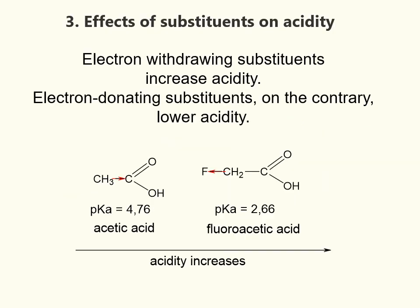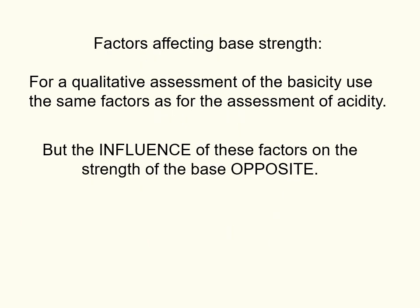Electron-withdrawing substituents increase acidity. Electron-donating substituents, on the contrary, lower acidity. Fluorine is an electron acceptor — therefore, fluoroacetic acid is stronger than acetic acid. For qualitative assessment of basicity, use the same factors as for acidity, but the influence of these factors on the strength of a base is opposite.